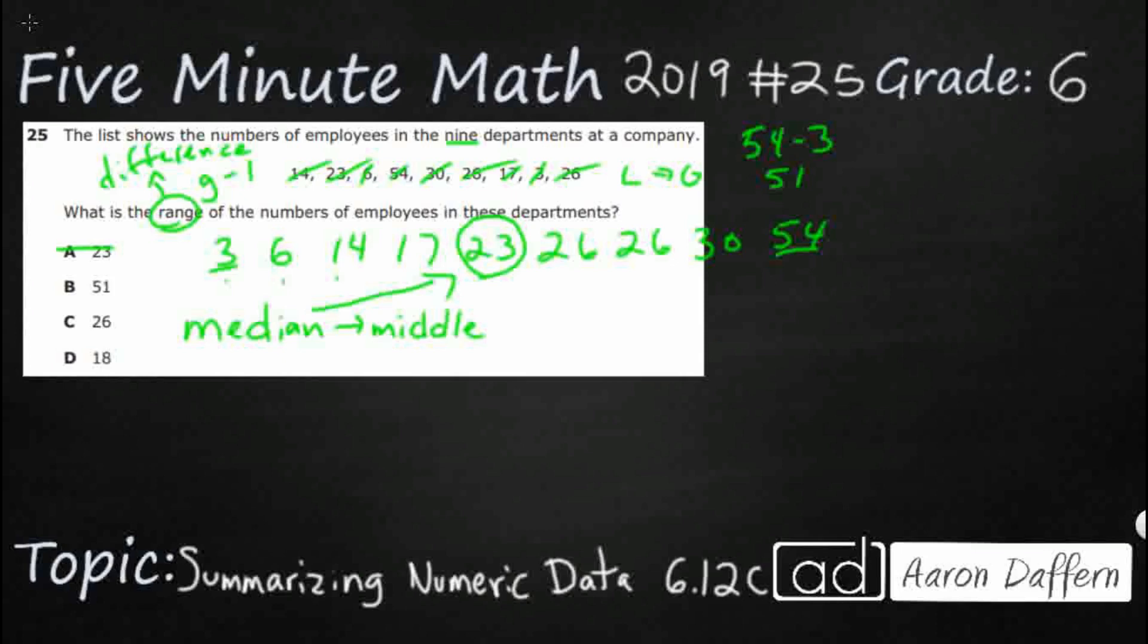You might even have been looking for the mode. So the mode is the most popular, the most chosen, whichever one shows up the most. And really there's only one number that shows up more than once, and that's 26. So you get two 26s right here, and that would be our mode.